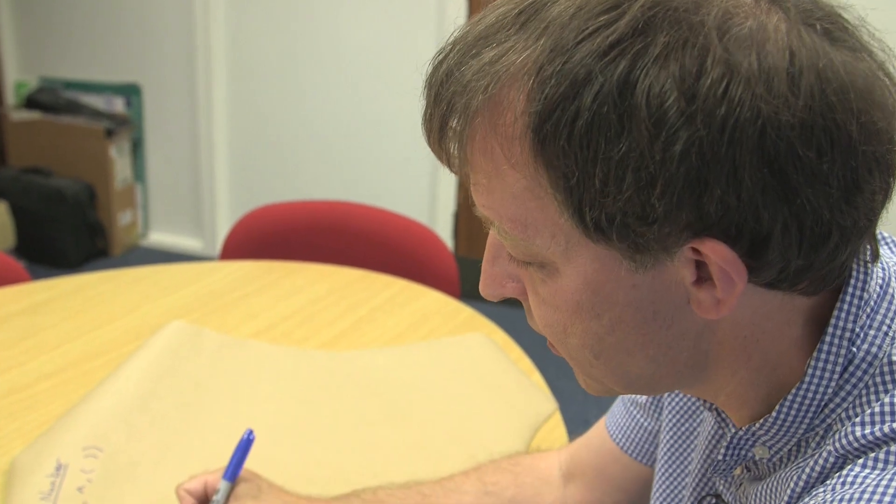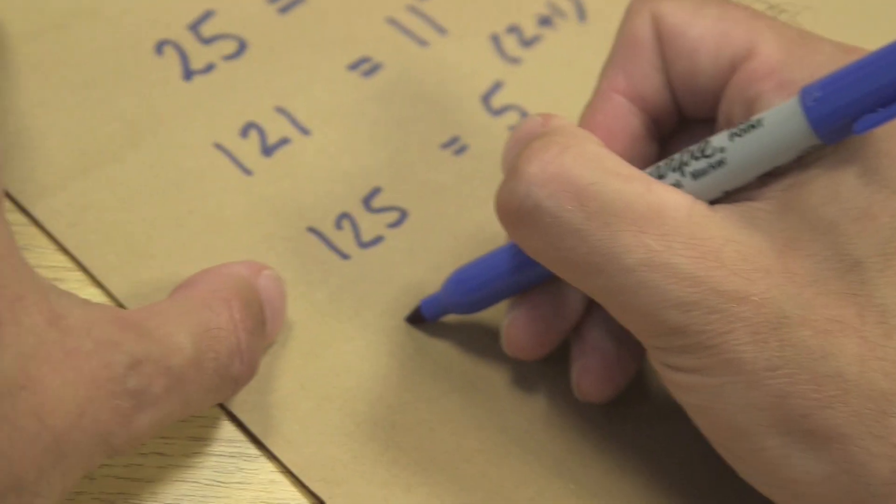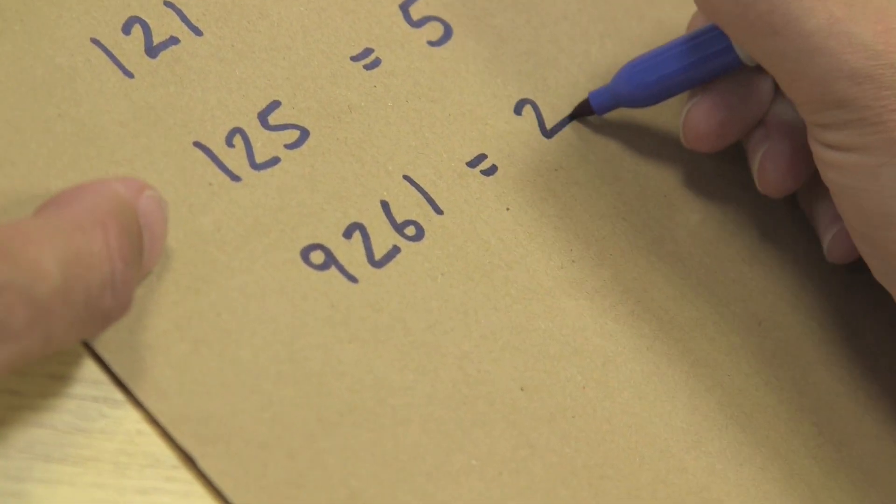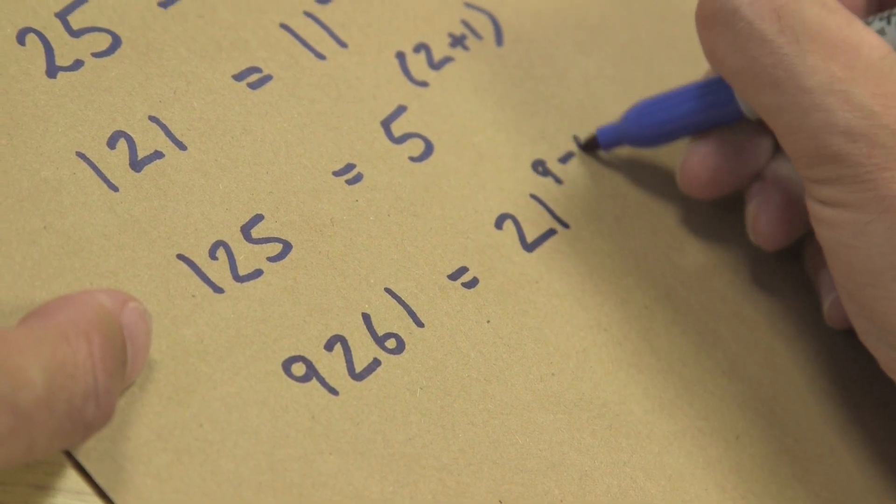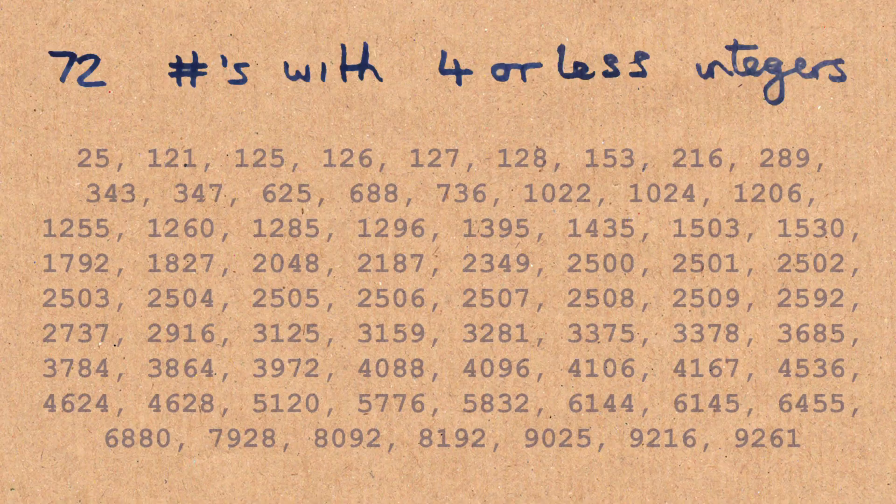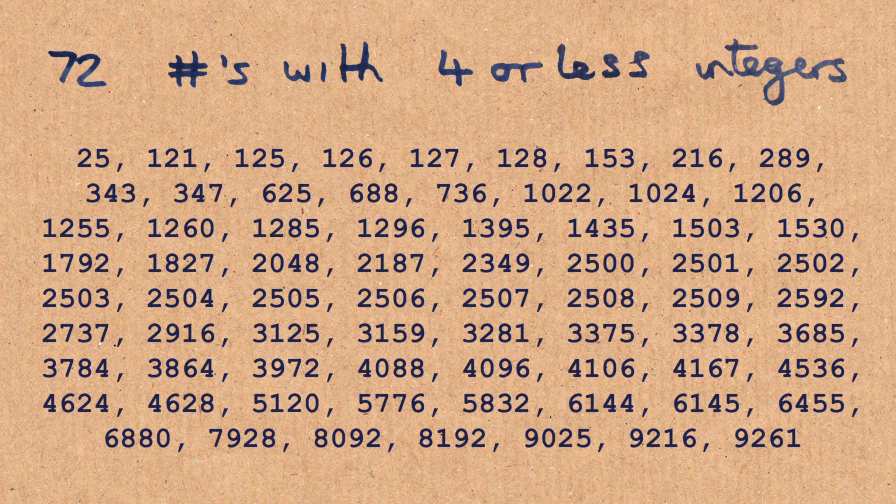Well, if I wanted to go for one with four digits, then 9261 is 21 to the power of 9 minus 6. So there's actually 72 of these numbers with 4 or less digits.